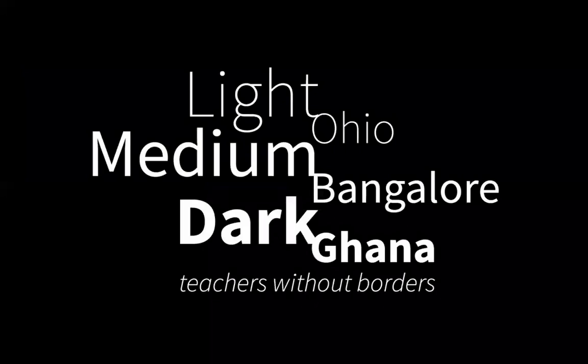This is a project we did as a classroom program — a collaboration between three continents: the US, India, and Africa. The cities were Ohio, Bangalore, and Ghana. We named the program 'Light Medium Dark,' according to our skin shades.